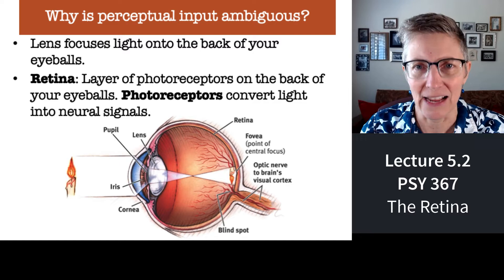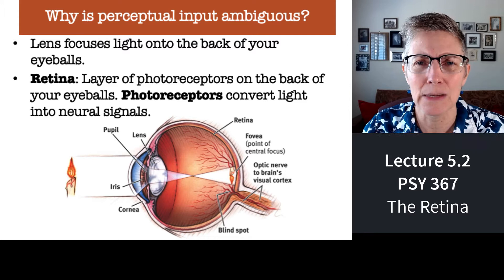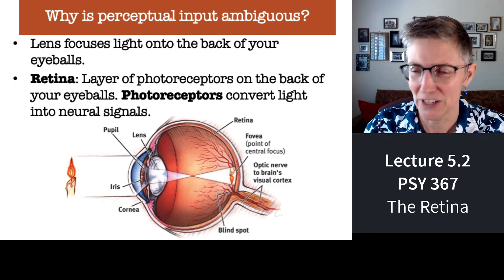So far so good, right? Well, except for one part. Your lens, when it projects the image of the outside world onto the back of your eye, it flips that image upside down. You see the world upside down — but nobody sees the world upside down. Well, the back of your eyes do. Kind of curious.